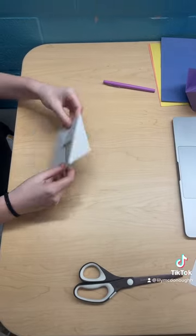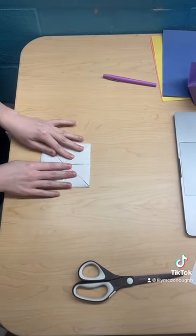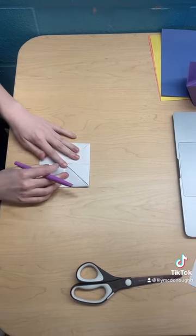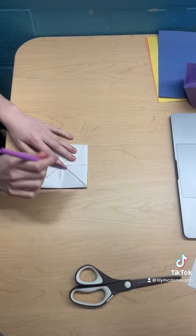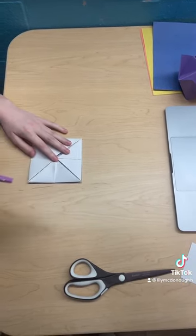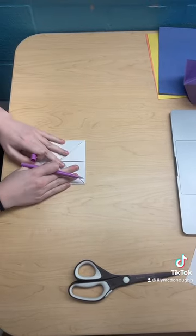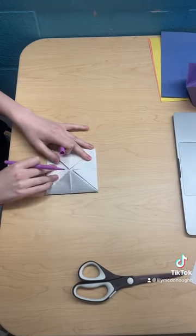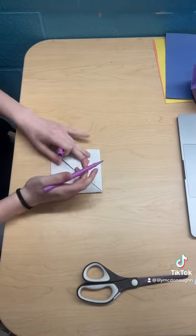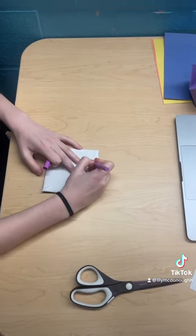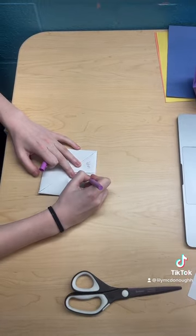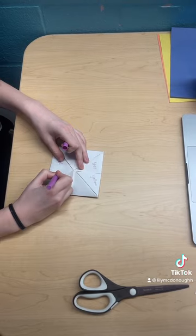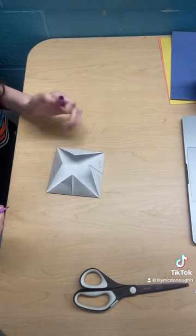Then you're going to flip it over. This part is a little tricky. I'm going to do colors and animals. For my colors, I'm going to write the colors on these two flaps right here.